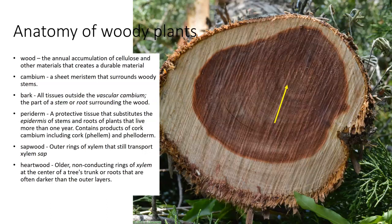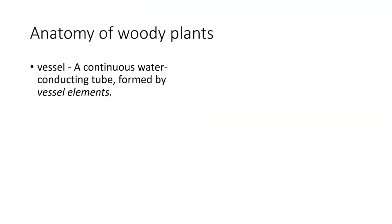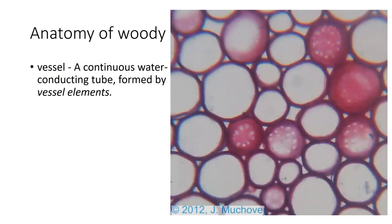The heartwood has an accumulation of phenolic compounds on the inside, which gives it those darker layers. When we talk about wood anatomy, there are certain types of materials we find on the inside. One is a vessel — a vessel is basically a continuous water-conducting tube formed by vessel elements. You can see vessels on the inside of this.